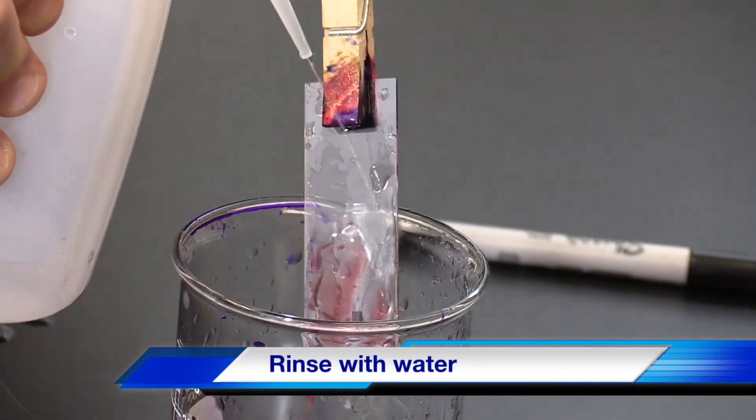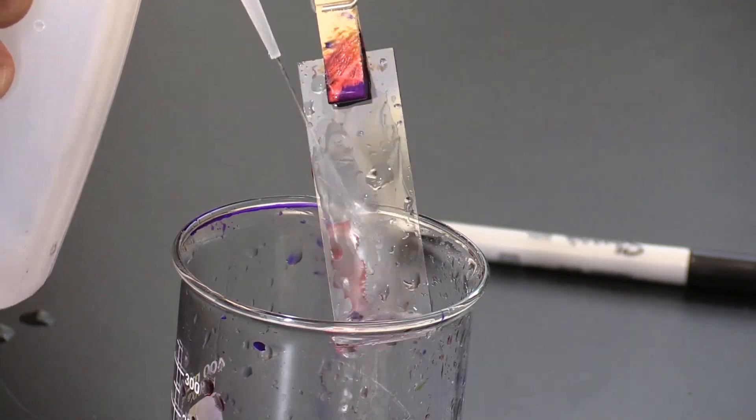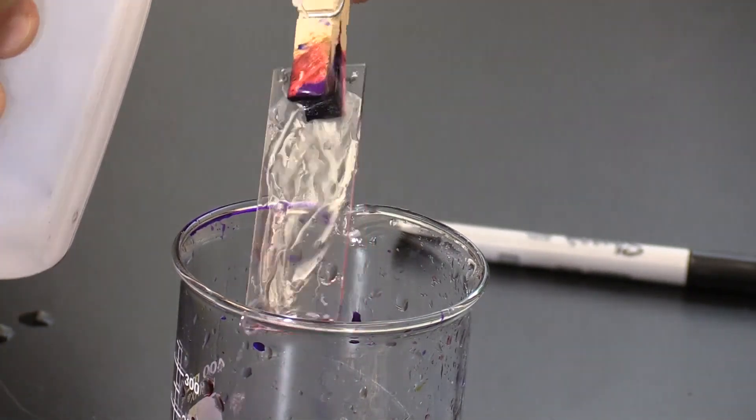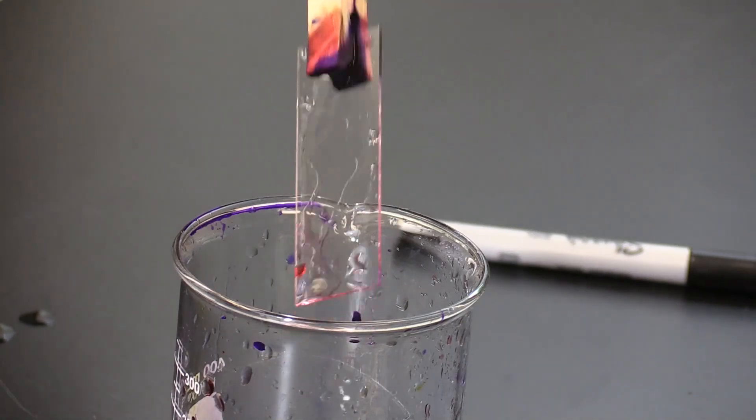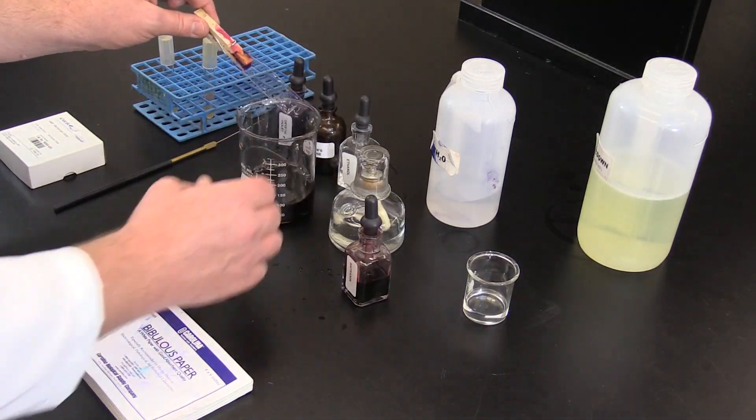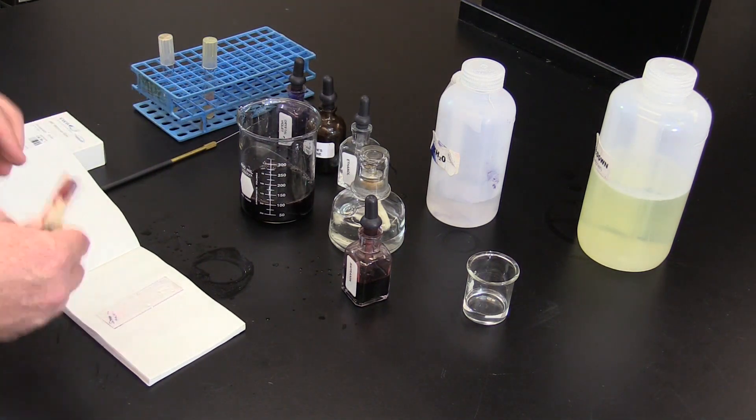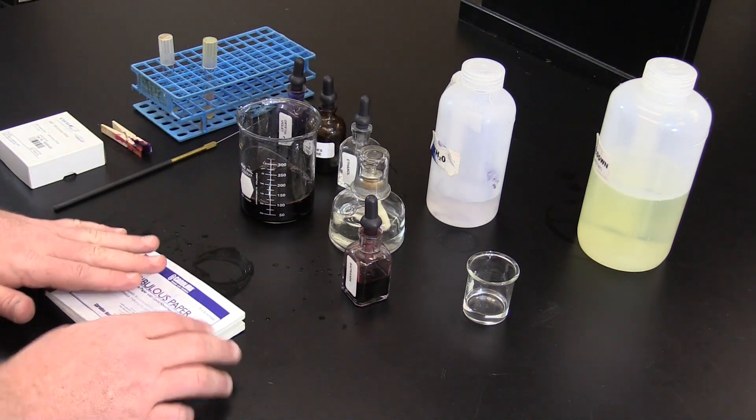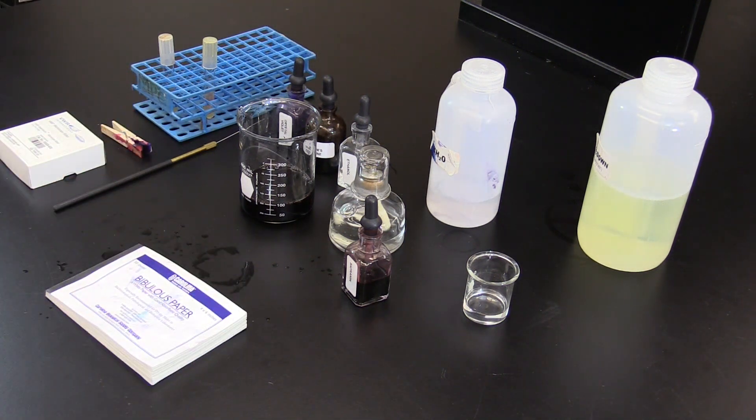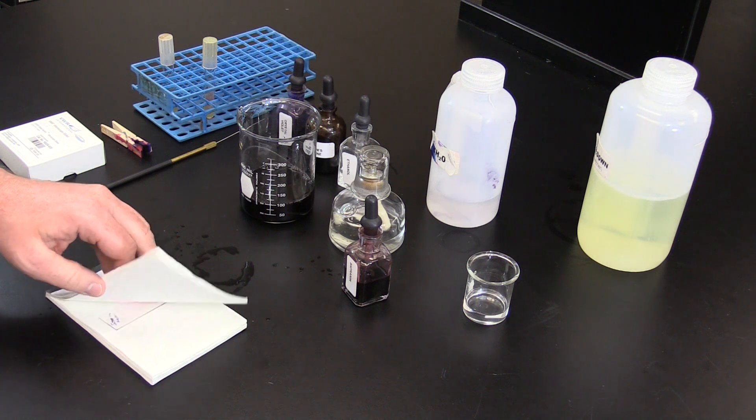Rinse the safranin away with water until the water running off the slide is clear. Now the slide needs to be dried. Place within the bibulous paper and close the booklet. Lightly press, but do not rub. Carefully remove the slide from the bibulous paper.